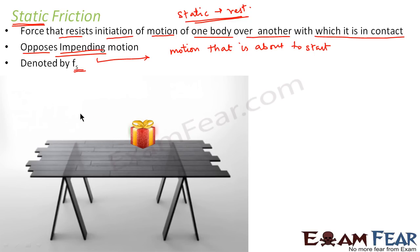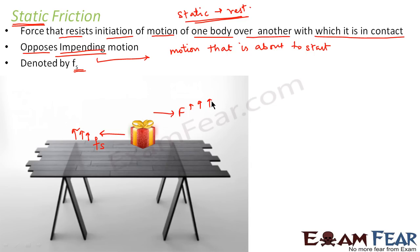Now let us have a look at this example. We saw that the box was lying at rest on this table. There is no frictional force acting on this box until we apply some external force on it. When we apply an external force F, the static friction comes into play because the box is at rest. As we keep increasing the magnitude of the applied force, the magnitude of static friction also keeps increasing. But the value of static friction can rise only to a certain limit, after which it cannot increase. When the applied force becomes greater than static friction, the box begins to move.